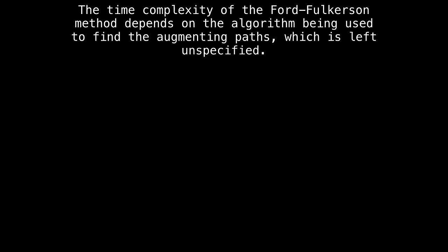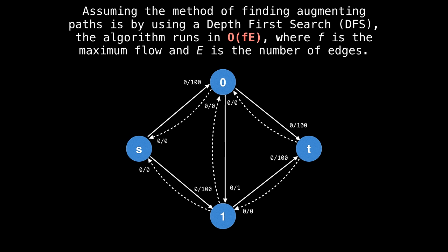In terms of the time complexity, the Ford Fulkerson method derives its complexity from how we actually find those augmenting paths, which as we know is left as an unspecified detail. If you assume that finding augmenting paths are found by doing a depth first search, then the algorithm runs in a time complexity of big O of F being the maximum flow times E, the number of edges in the graph.